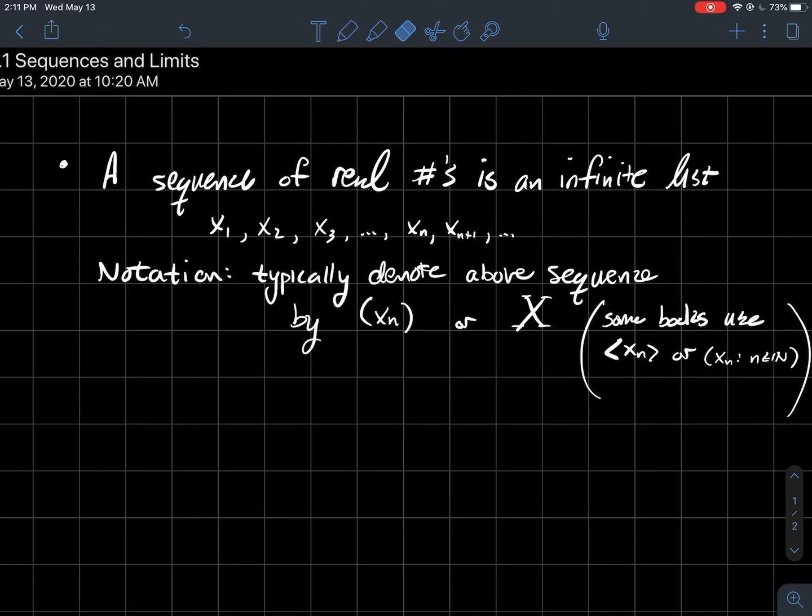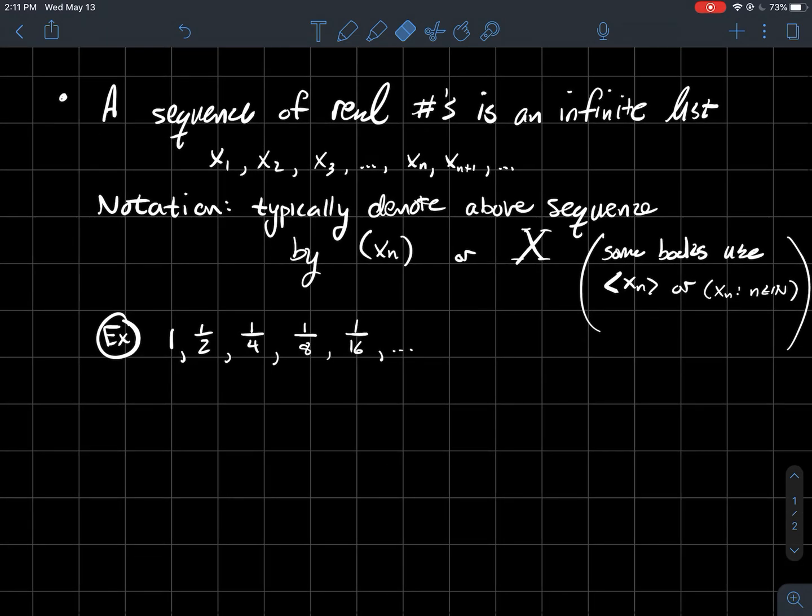So let's look at some examples of sequences. I'll list out a few terms here. One, one half, one fourth, one eighth, one sixteenth. So x₁ is one, x₂ is a half and so on. And what we would like to be able to do is, is there a convenient formula so that I could write this as xₙ?